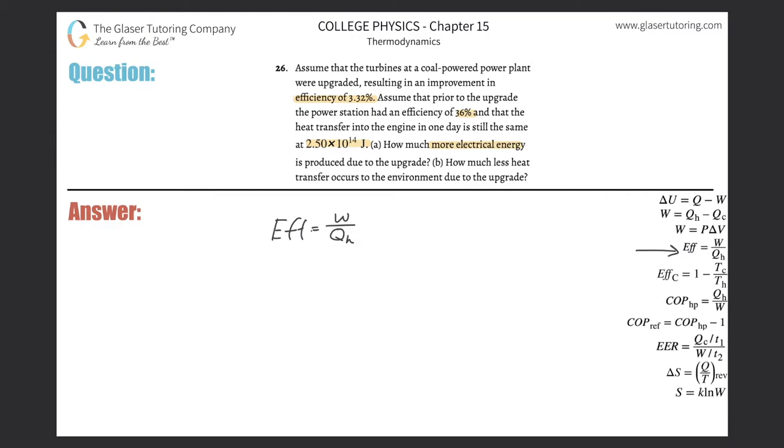Now, if they told us the change in efficiency, I can basically, instead of writing EFF, let me just write E here just to simplify it. It's not energy, it's efficiency. The change in efficiency would be a direct result of the change in work output because they told us that the heat donated to the engine is constant. So this will be change in W over Q sub H.